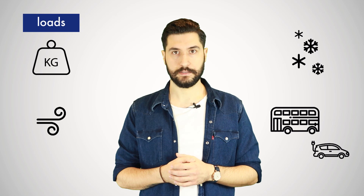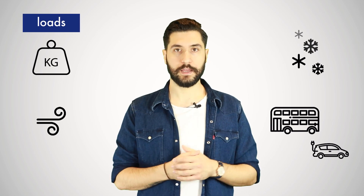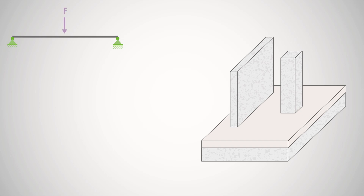Forces that act permanently or only sometimes on a structure — such as the self-weight of the structure, wind, snow, or even vehicles — are called loads. We can divide these into the following types depending on the target surface. Single loads are forces applied at specific points, indicated by an arrow showing the direction and point of application, such as the load transfer of a column to a foundation.